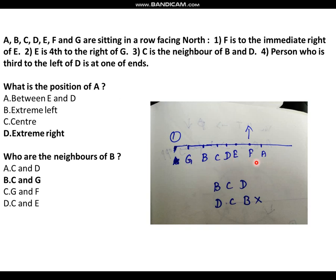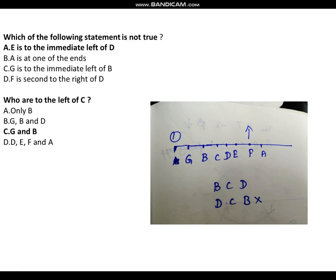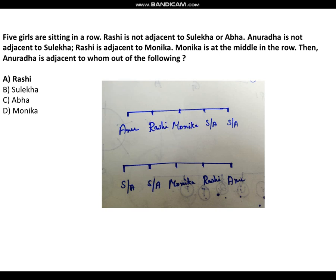Now answering the questions: the position of A is extreme right. The neighbors of B are G and C — option B. Which statement is not true: E is to the immediate left of D — that is not true because E is to the right of D. Who are to the left of C? G and B. So now you understand how to solve these questions and answer them easily.